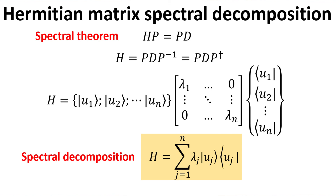The spectral theorem also provides a recipe for decomposing the normal matrix in terms of the bras and kets of the underlying vector space. We begin with the spectral theorem, where matrix P and D consist of the eigenvectors and eigenvalues of Hermitian matrix H. Multiplying the equation by the inverse of P, and since P is a unitary matrix, its inverse equals its adjoint. Writing matrices P and D explicitly in terms of eigenvectors and eigenvalues, we arrive at an expression of the H matrix as a linear combination of ket-bra outer products, as shown in the yellow box. Such spectral decomposition of an operator finds widespread usage in quantum mechanics, a topic we will revisit in future videos.